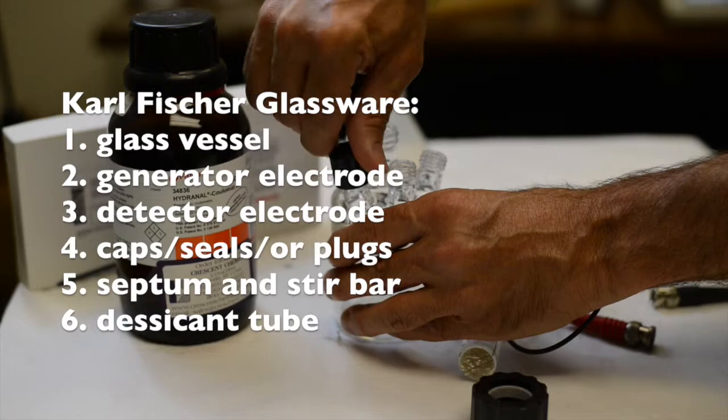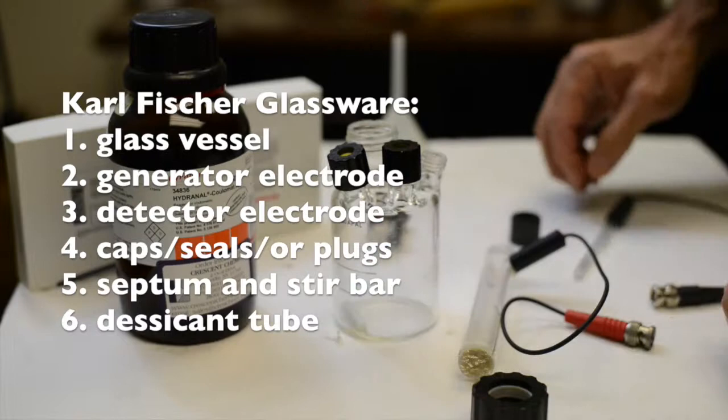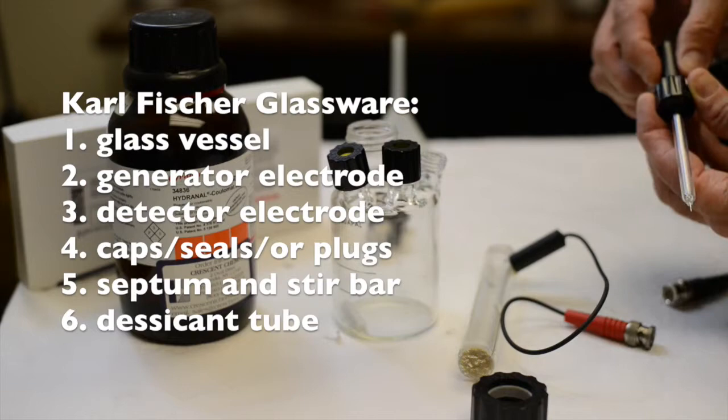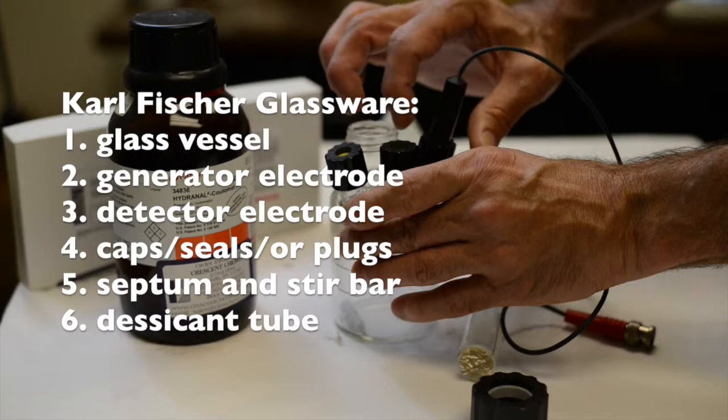The generator electrode is a larger diameter electrode that creates the electrochemical reaction in the vessel. The generator electrode can come as a single or a dual reagent electrode. The detector electrode is a smaller diameter electrode and as its name reveals, it is designed to detect for any moisture inside the vessel.